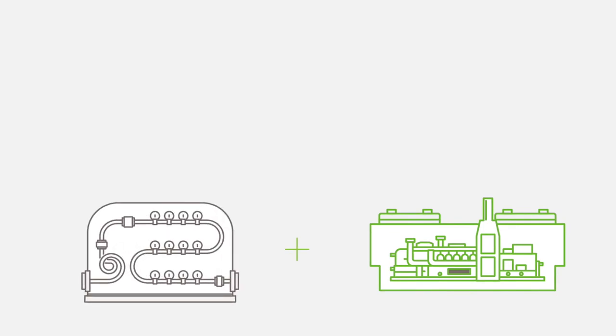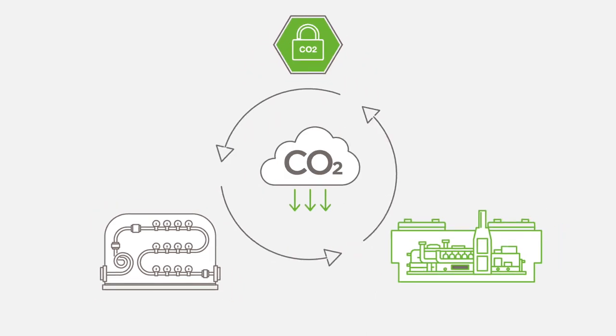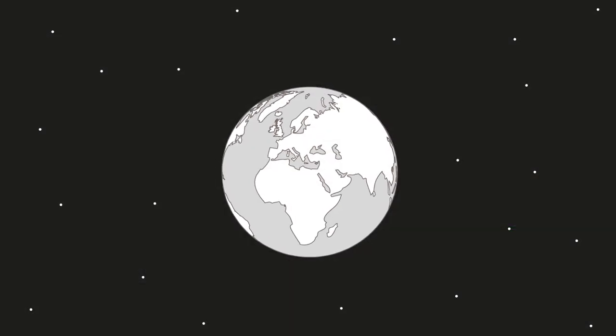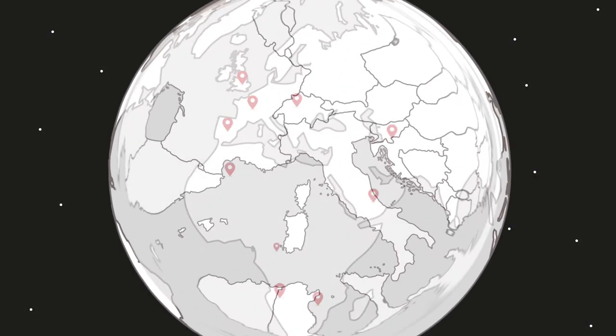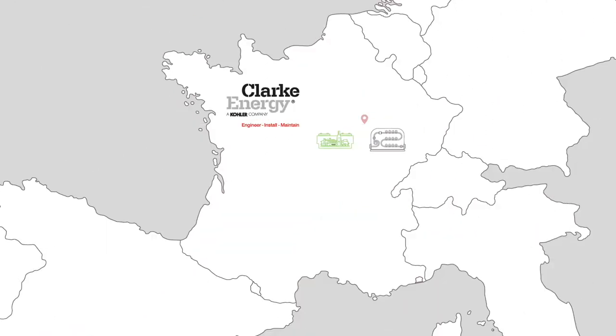Biogas CHP plants and biogas upgrading systems also have the potential to recover CO2. If carbon capture and conversion technology is added to biogas engines, the systems can also help reduce carbon dioxide in the atmosphere. Clarke Energy have supplied biogas power generation and biogas upgrading solutions across the globe.